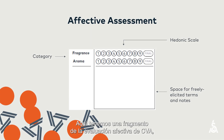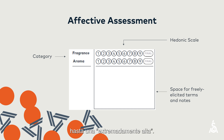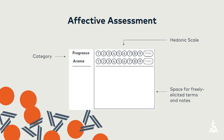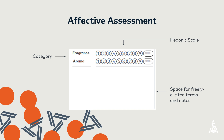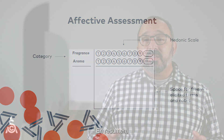Here is a screenshot of the effective section of the CVA, which shows the hedonic scale in context. The cupper uses a 1 to 9 scale to rate impression of quality from an extremely low impression of quality to an extremely high impression of quality. This assessment is repeated for each of the eight categories of the form. There is also space available for freely elicited terms and notes. The effective scores are converted into a 100-point scale using a formula published in the CVA protocol.